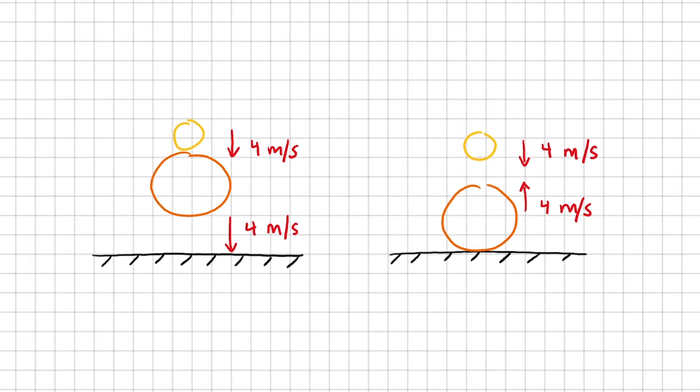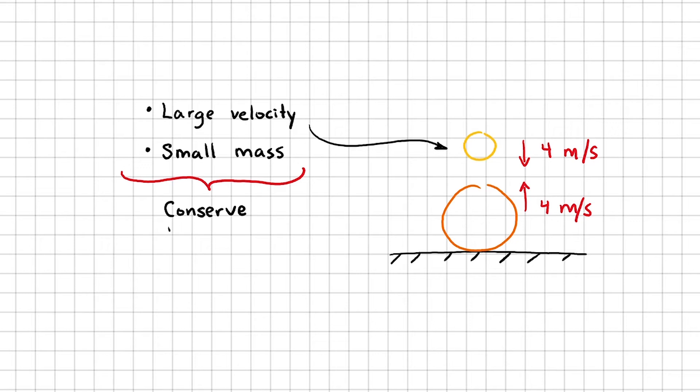So this is a collision problem that follows the conservation of energy and conservation of momentum. I'm going to go through the mathematics in a moment, but for those of you who prefer understanding the conceptual idea, the tennis ball needs a large velocity to compensate for its small mass in order for momentum to be conserved. So let's dive into the math now.